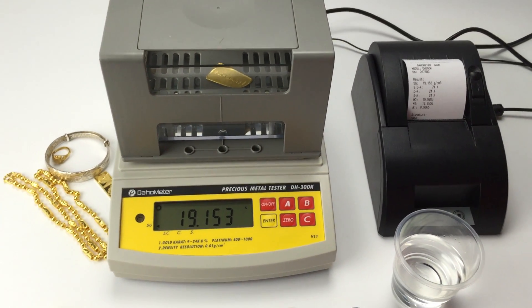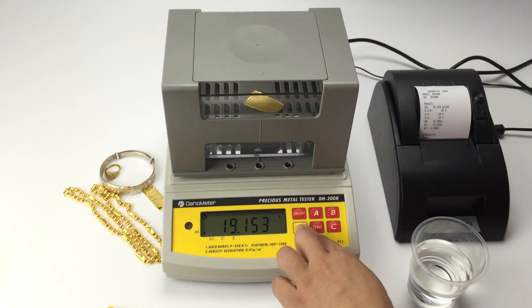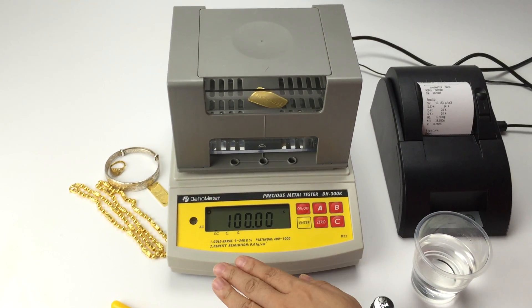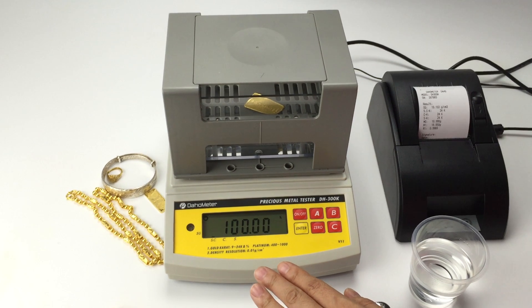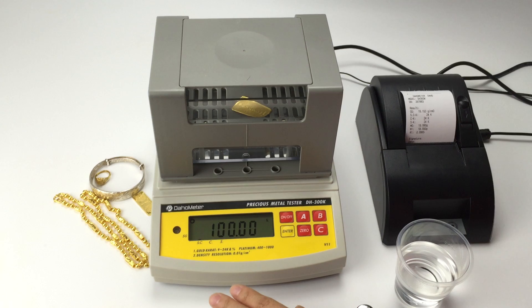Then let's press ENTER. 100. This is the purity percentage for gold, silver, copper.